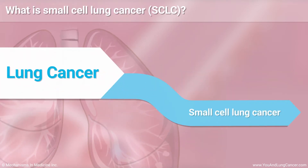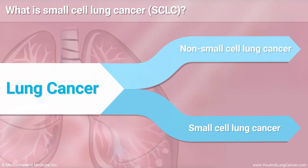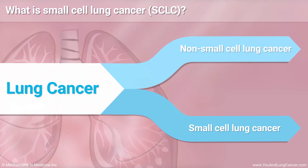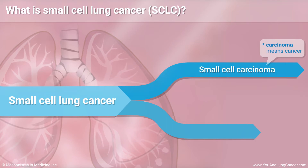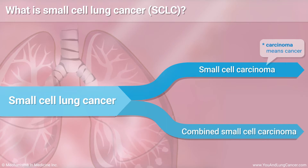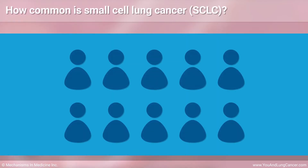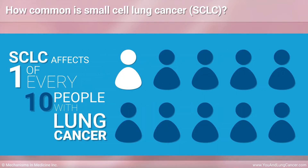Small cell lung cancer is one of two major types of lung cancer. The other one is non-small cell lung cancer. The two most common subtypes of small cell lung cancer are small cell carcinoma, or oat cell cancer, and combined small cell carcinoma. Small cell lung cancer affects about one of every ten people with lung cancer.